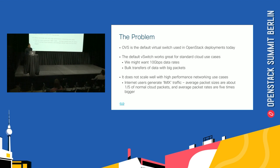Internet users actually generate iMix traffic, not large packets. These packet sizes are just one-fifth the size of normal cloud packets, and the average data rate is also very high — it's five times higher. If you generate these kinds of packets, you will realize that your performance has deteriorated really rapidly.